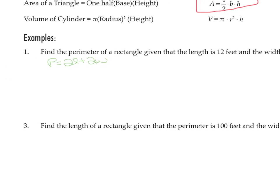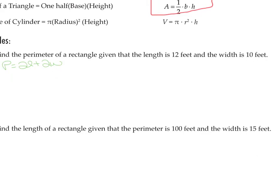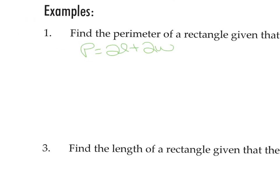Now we know the length is 12, so we're going to replace L with 12, and we know the width is 10, so we're going to replace the W with 10. So once we do that, we should be able to then simplify. So the perimeter equals 2 times the length. The length is 12 plus 2 times the width, and the width is 10. And now we can just simplify.